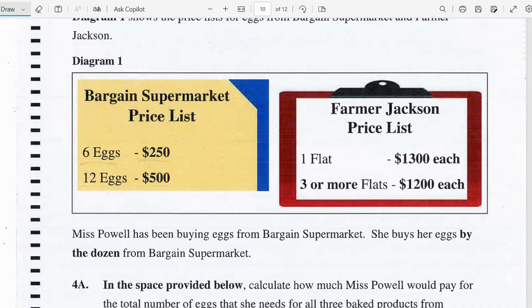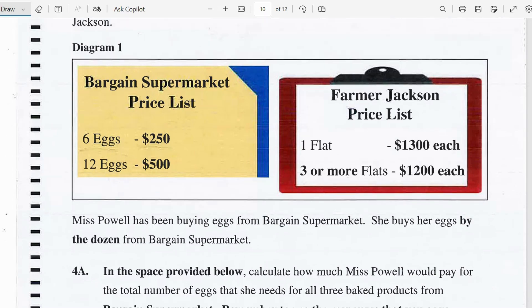Let's look at diagram 1. So for Bargain Supermarket the price list says that 6 eggs is $250 and 12 eggs is $500. And for Farmer Jackson a flat of egg is for $1,300 each. And if you purchase 3 or more flats you'll get a flat for $1,200.